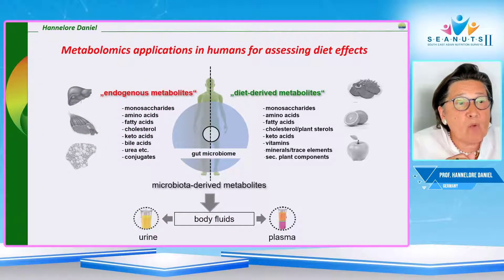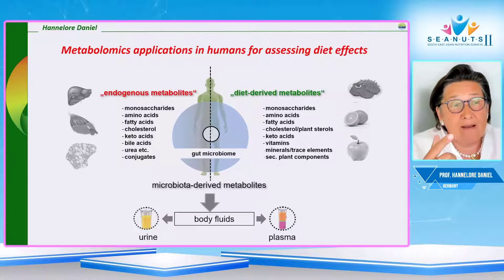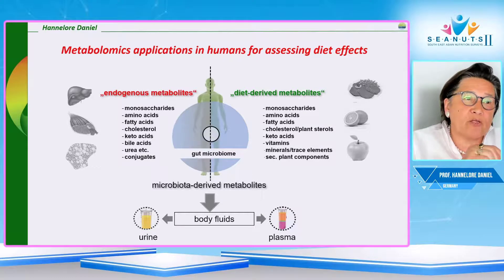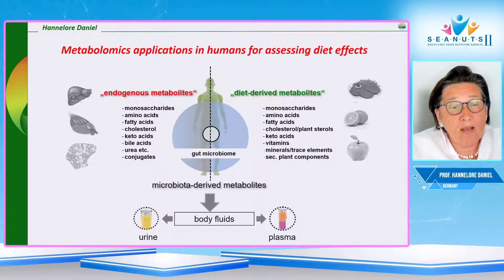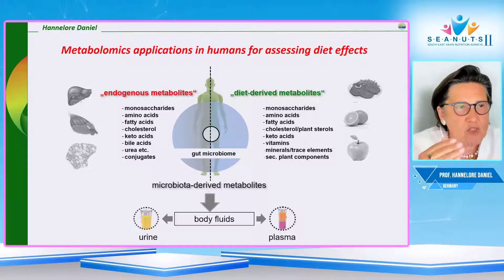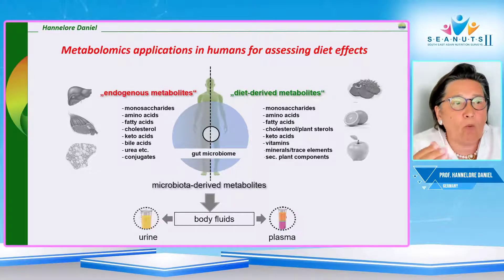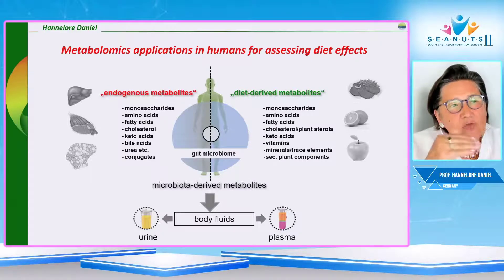If we look at diet-derived metabolites measurable in human plasma after consuming certain food items, we face a problem: many of those metabolites are also produced endogenously, so you don't know exactly whether they come from diet or are produced in the human body — making interpretation complicated. It's further complicated by microbiome-derived metabolites that appear in blood and plasma; some bacteria have very specific metabolic pathways producing strange molecules, and we are just now learning what is produced by the microbiome and later pops up in blood or urine.